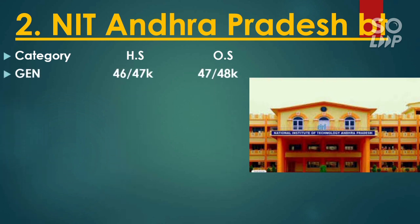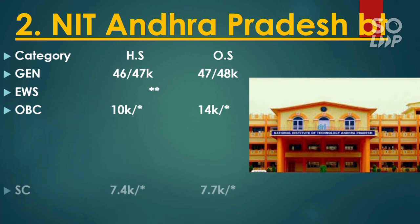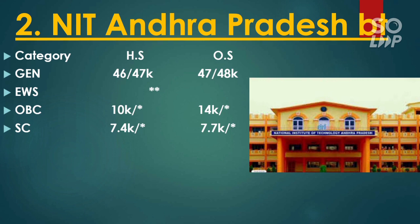For NIT Andhra Pradesh Biotechnology, the General other state cutoff is 47,000 and 48,000 for male and female — meaning around 95–96 percentile. For EWS, there is no seat reserved. For OBC, it is 14,000 for male. For SC, it is 7,700. For ST home state, it is 4,000 with no other state reservation. Wherever you see a star mark, that category is not reserved.